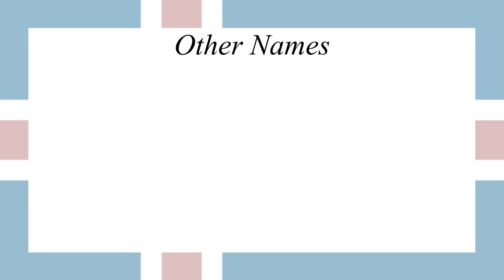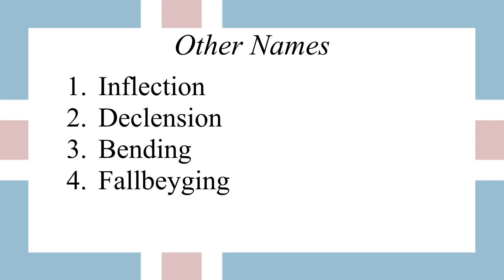Cases go by other names, so you might hear this concept referred to in several ways. You may hear it referred to as inflection — nouns, adjectives, or pronouns inflecting. You might also hear declension, or a noun declining. You might also hear bending, which comes from the Icelandic name for it, so you might hear that nouns or words are bending. The Icelandic word is fatlbeink.